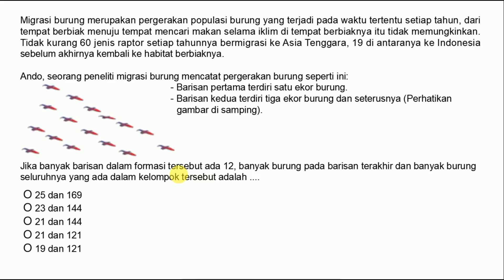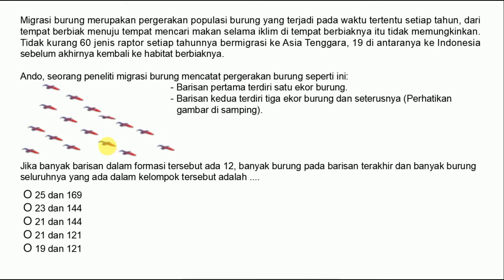Ini kaitannya dengan materi baris aritmetika. Teman-teman harus paham konsep dari baris aritmetika. Baris pertama ada satu, baris kedua ada tiga — beda dua. Dari baris kedua ke baris ketiga ada lima, masih beda dua. Dari baris ketiga ke baris keempat ada tujuh, beda dua. Berarti dari baris ke baris bedanya dua semua.